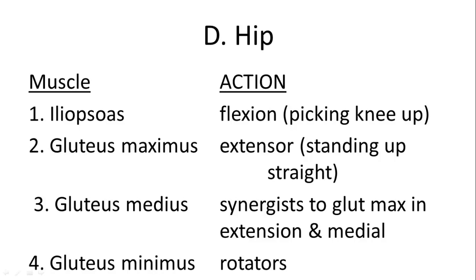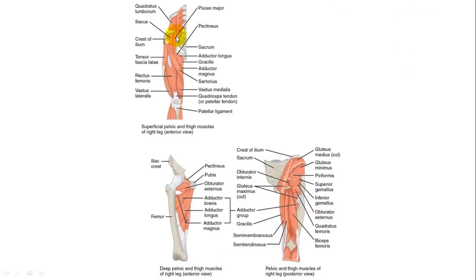Now moving into the hip and leg. In the hip you have the iliopsoas, which is actually two muscles — the iliacus and the psoas major. Then you have the gluteal muscles surrounding the posterior part. The gluteus maximus is the biggest extensor muscle. The gluteus medius is a synergist to that, and the gluteus minimus is for rotating. The gluteus maximus is cut away here so you can see the gluteus medius and minimus. There are lots of other muscles found throughout here as well.